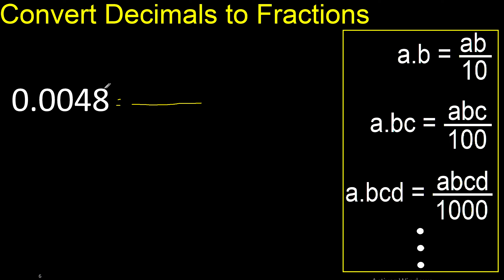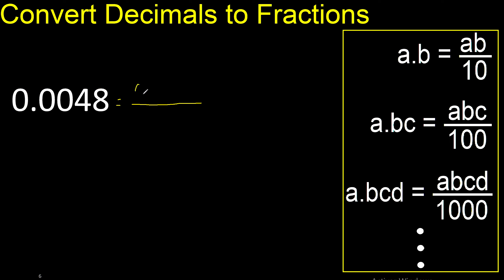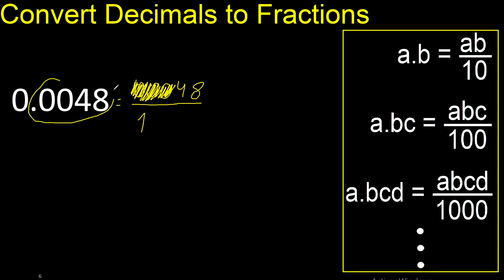First, all the number without point — always eliminate the zero here, always number 1. After the point there are 4 numbers, therefore 4 zeros: 1, 2, 3, 4.